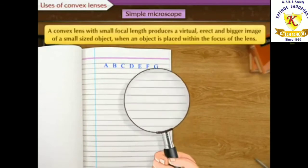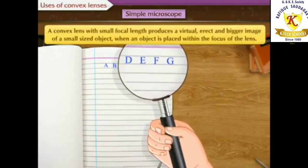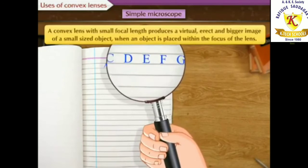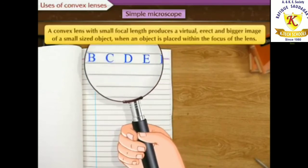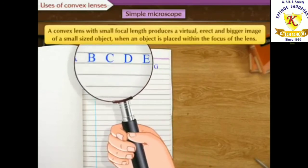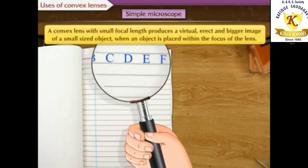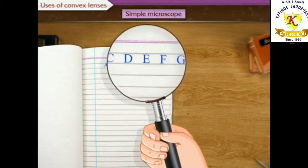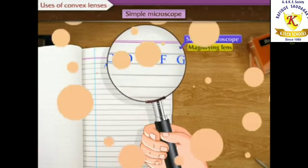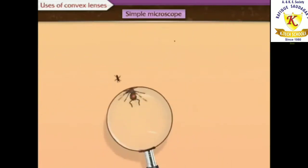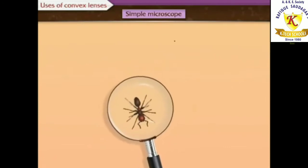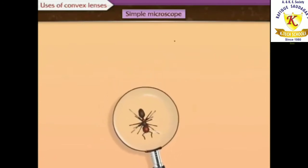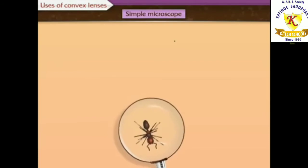A convex lens with a small focal length produces a virtual, erect, and bigger image of a small size object when an object is placed within the focus of the lens. Such a lens is called a simple microscope or magnifying lens. One can get a 20 times larger image of an object using such microscope.